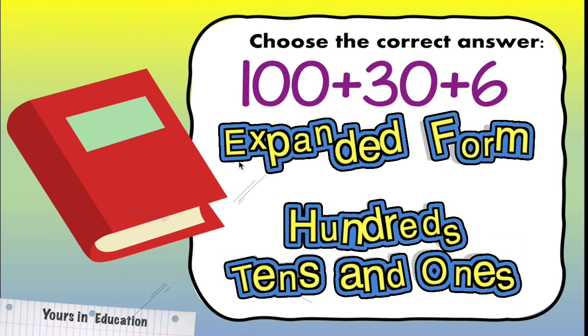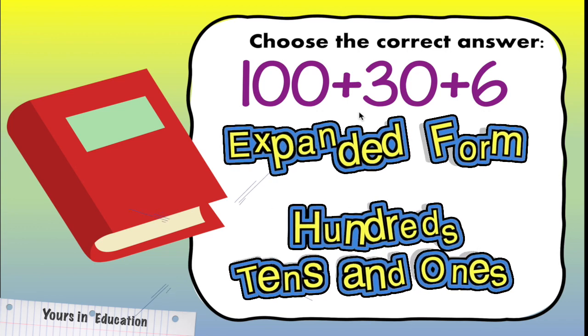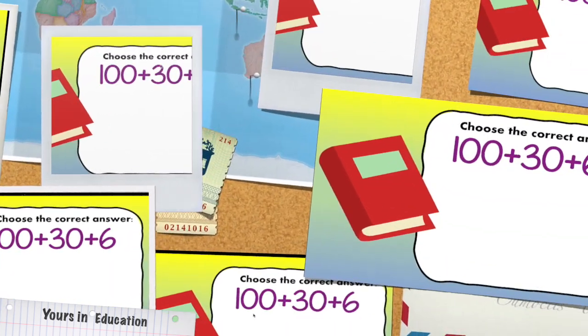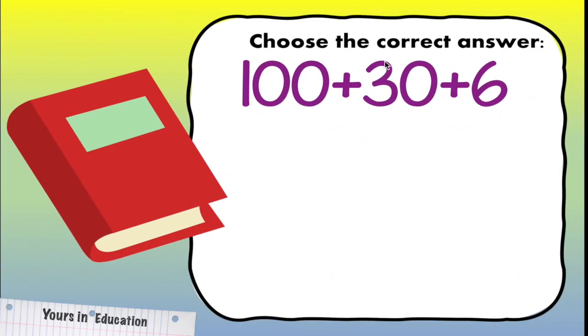And yes, as you can see we're using hundreds, tens, and ones. So if it says choose the correct answer, what do you think is the standard form of 100 plus 30 plus 6? 100 plus 30 plus 6 is 136.